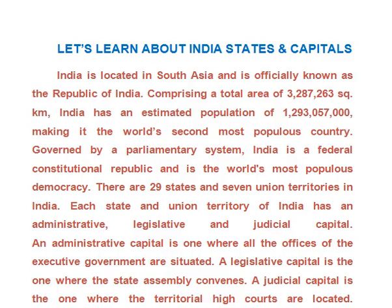Governed by a parliamentary system, India is a federal constitutional republic and is the world's most popular democracy. There are 29 states and 7 union territories in India.